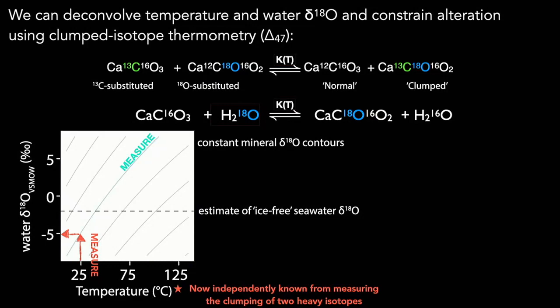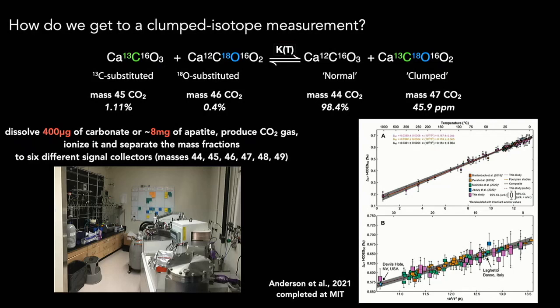In my research lab, we have a mass spectrometer that allows us to measure very small amounts of carbonate — 400 micrograms of carbonate. We're also measuring apatite, approximately 8 milligrams of apatite. This allows us to micro-drill and do bed-specific work of carbonation. Carbonate rocks are complicated with lots of different components.